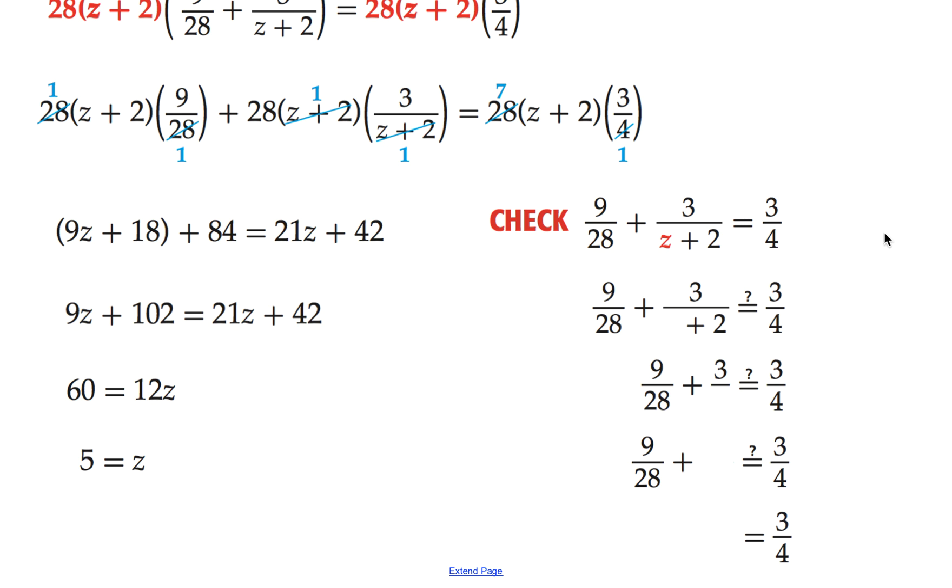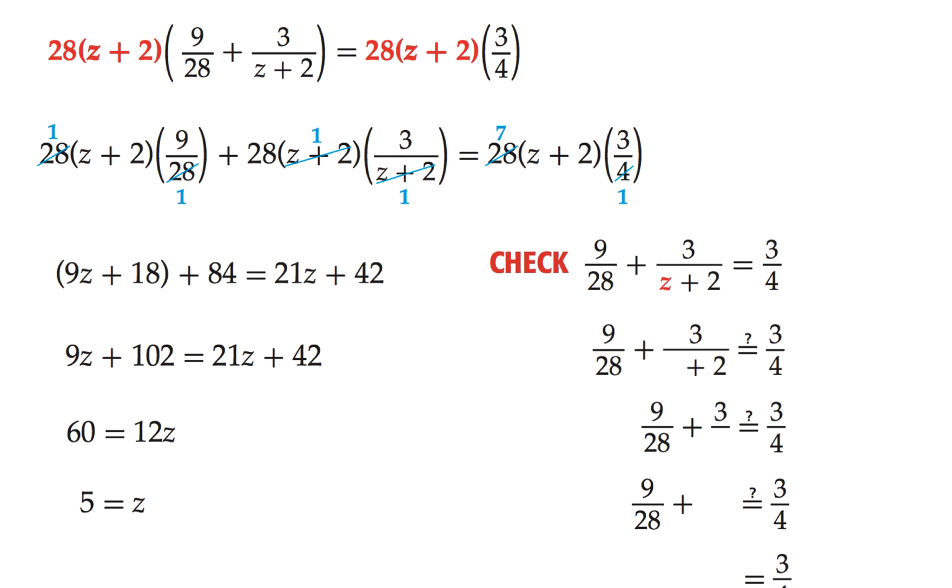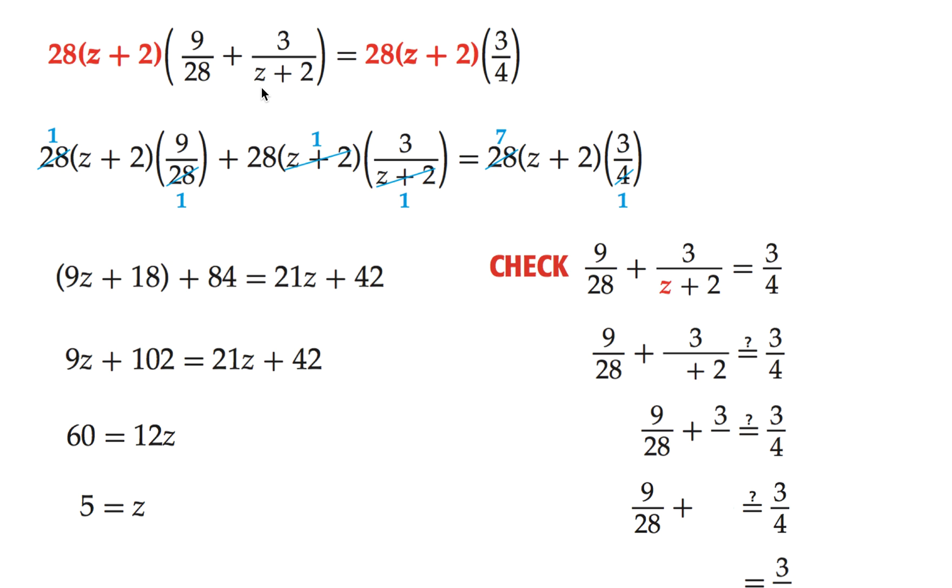Now, you'll notice in our original equation, the only value z cannot be is negative 2, and since we didn't get a negative 2, we won't have any extraneous solutions here. But let's go ahead and check to make sure we get a valid solution.